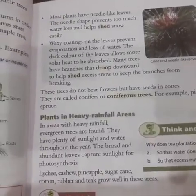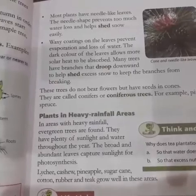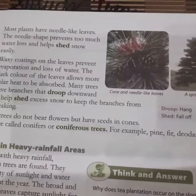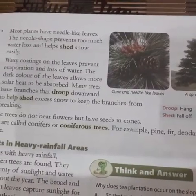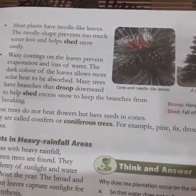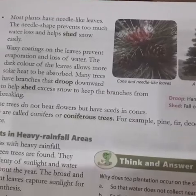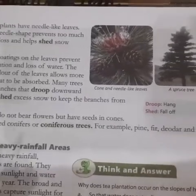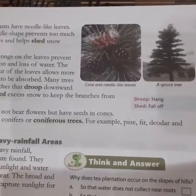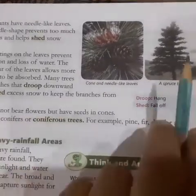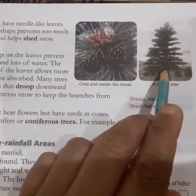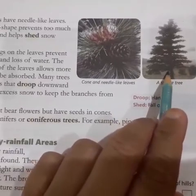Today we have learned about plants in the mountains. Plants on mountains and hills are adapted to grow in very cold temperatures. Most plants are tall and straight, and they are cone-shaped so that snow falls off easily from their surface.